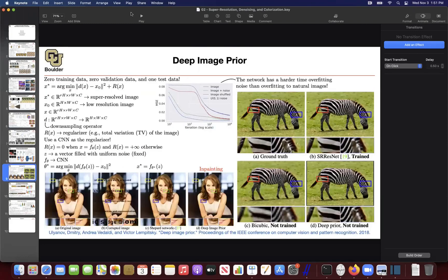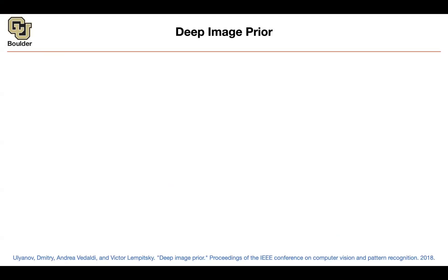We can continue with Deep Image Prior. I really like this paper because it helps develop intuition about convolutional neural networks and their applications, like super resolution and denoising. What is surprising about this work is that it can actually solve the super resolution problem using zero training data, zero validation data, and only one test image. Maybe it's not a perfect solution, but it is doable — you are being data efficient in that sense.